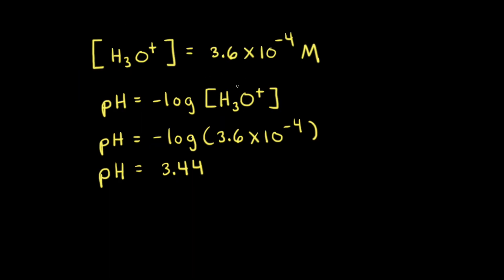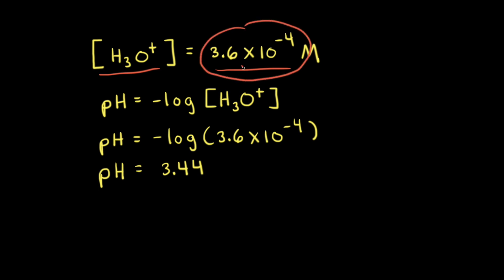Let's say we have a sample of lemon juice and the measured concentration of hydronium ions in solution is 3.6 times 10 to the negative fourth molar. Since we have the concentration of hydronium ions, we can simply plug that concentration into the equation for pH. So the pH is equal to the negative log of 3.6 times 10 to the negative fourth, which is 3.44.